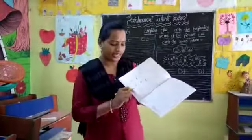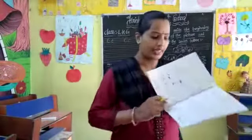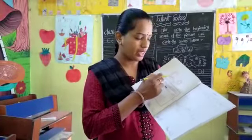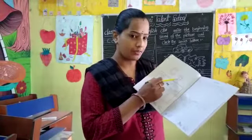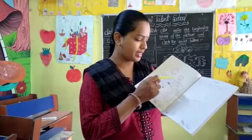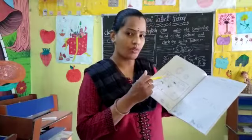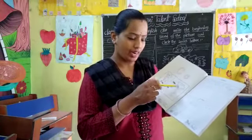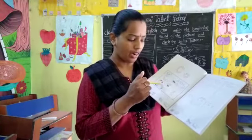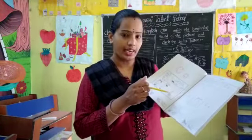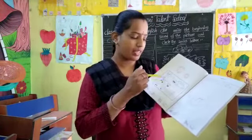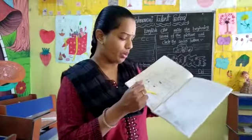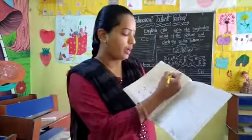Open page number 18 and 19. See here, what is there? Capital C and small c is there. C for cat, car, cow, candle. Say everyone: C for cat, car, cow and candle.